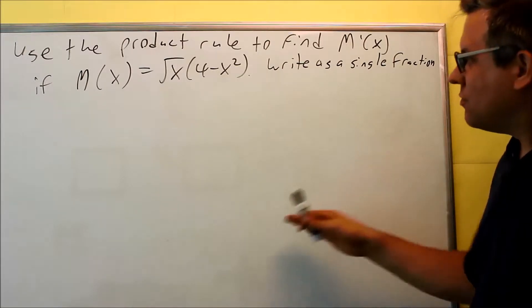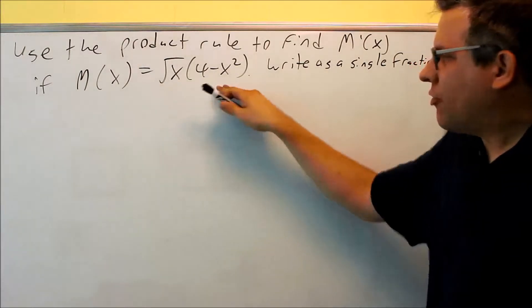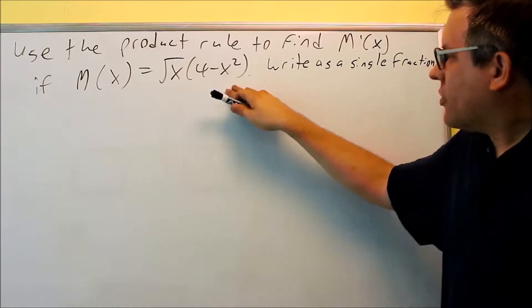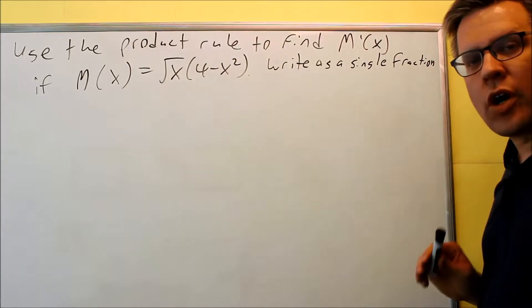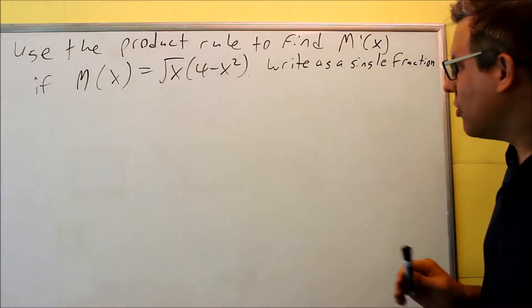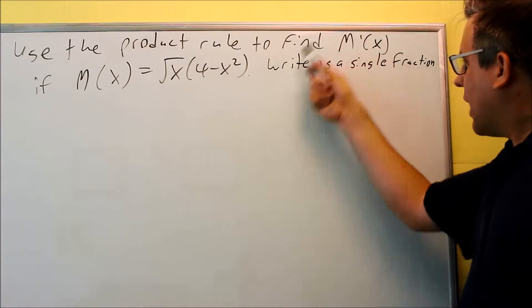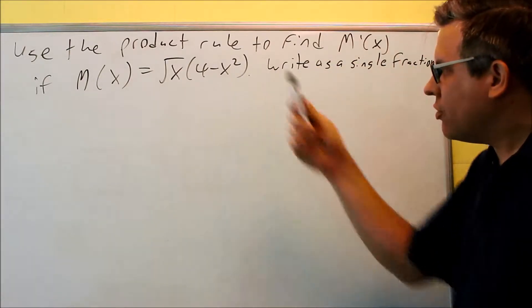Okay, this one is going to use the product rule. Here is our function, m of x, given as that. This also tells us that we need to write our answer as a single fraction. So not all problems do you have to do that, but because it asks us specifically to do so, we do need to do that here.